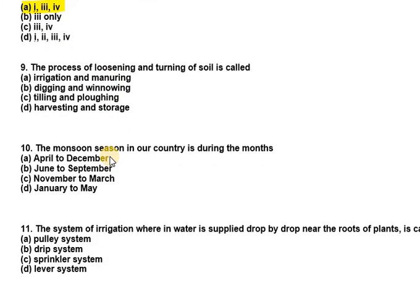Question nine: the process of loosening and turning of soil is called — irrigation and manuring, digging and winnowing, tilling and plowing, or harvesting and storage? Since it asks about loosening and turning of soil, the answer is tilling and plowing.